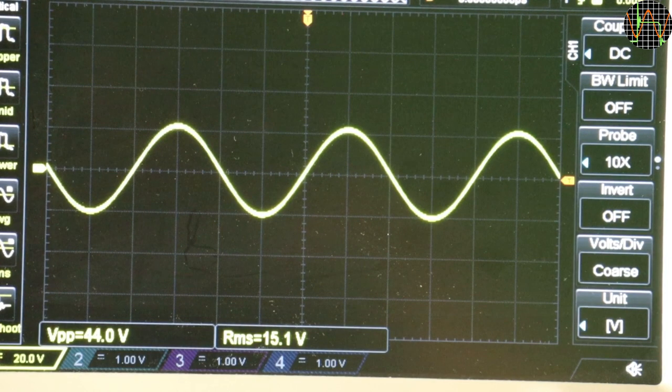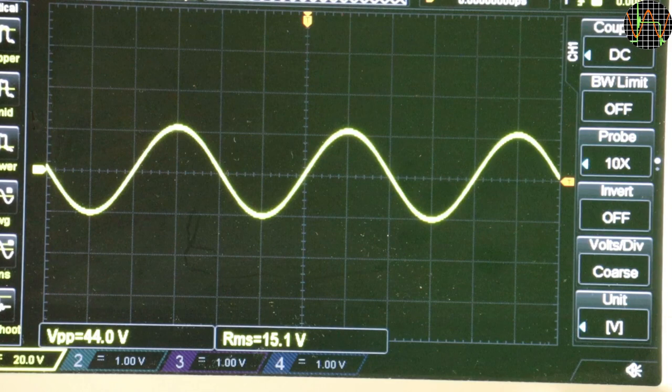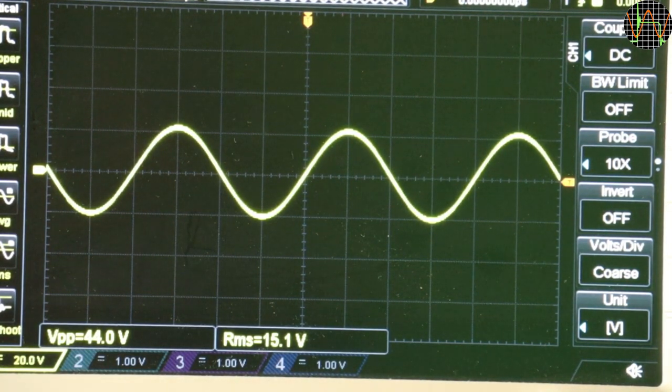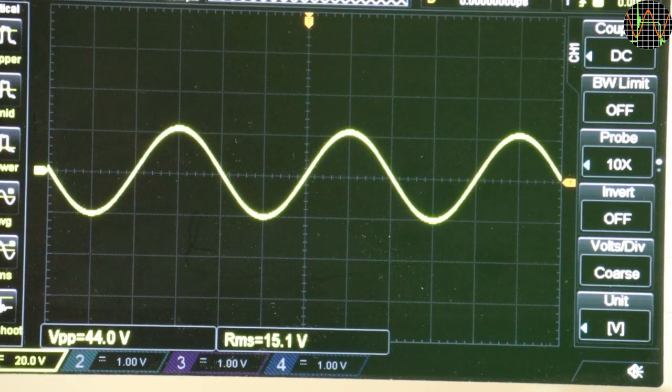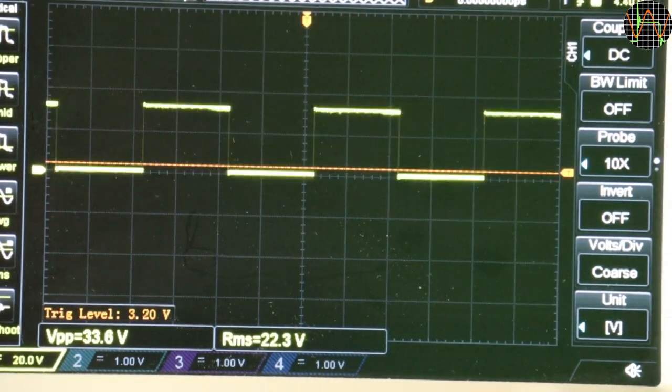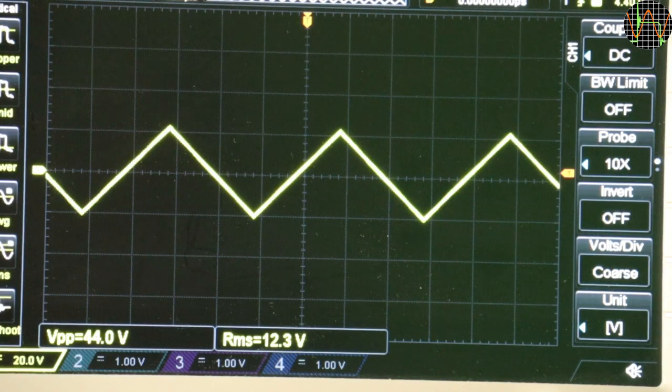A couple of waveforms from my function generator measured at the output of the amplifier with no load. I think the frequency was 1kHz, unfortunately the upper part of the scope screen is cut off in the video. Sine, Rectangle, Pulse, Needle, Triangle, Sawtooth.